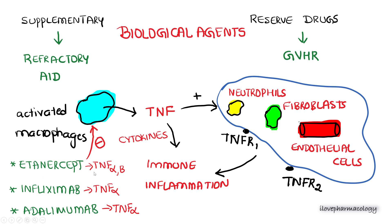Etanercept will inhibit both TNF-alpha and beta. Infliximab is more selective and will inhibit only TNF-alpha activity. Adalimumab will also inhibit TNF-alpha activity. Adalimumab is less antigenic in nature, and infliximab is a chimeric monoclonal antibody. These three drugs will inhibit TNF activity.